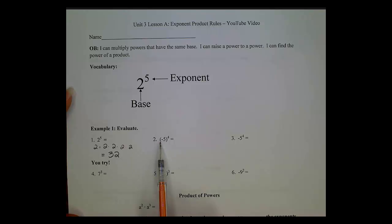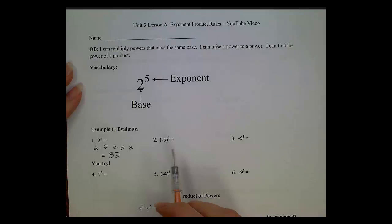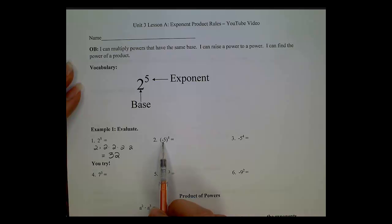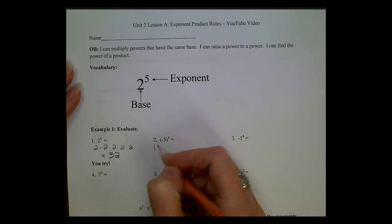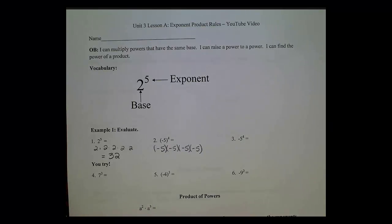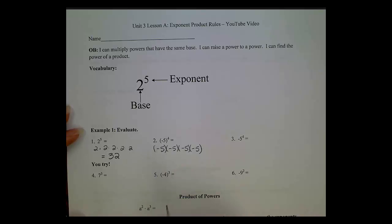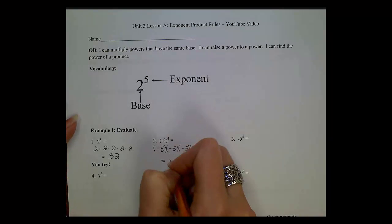Our next problem is negative 5 to the 4th power. We have a negative number being raised to an exponent, so we need to be extra careful and pay attention to whether the negative is also being raised to that 4th power. Here where it's inside the parentheses, the negative is included. So this can be rewritten as negative 5 times negative 5 times negative 5 times negative 5. You have to type it in with those parentheses or you will get a wrong answer. This gives us positive 625.